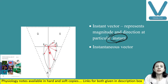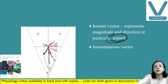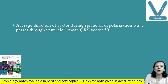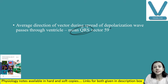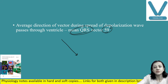When we wish to get the instantaneous vector, you will have multiple arrows because at different times the activity is in different directions. In a normal heart, if we take the mean QRS vector — the average vector — the direction is plus 59 degrees. This is the direction of the mean QRS vector, which is the average direction of the vector during the spread of the depolarization wave.